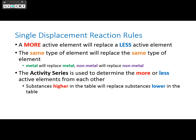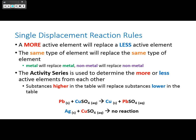Substances higher in the activity series table replace substances lower in the table. For example, lead plus copper sulfate makes copper plus lead sulfate. However, silver plus copper sulfate will have no reaction.